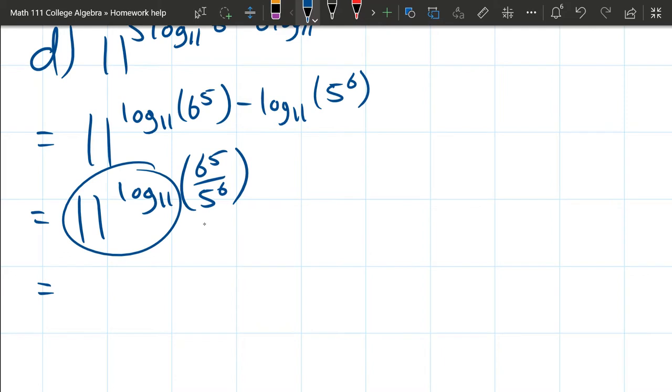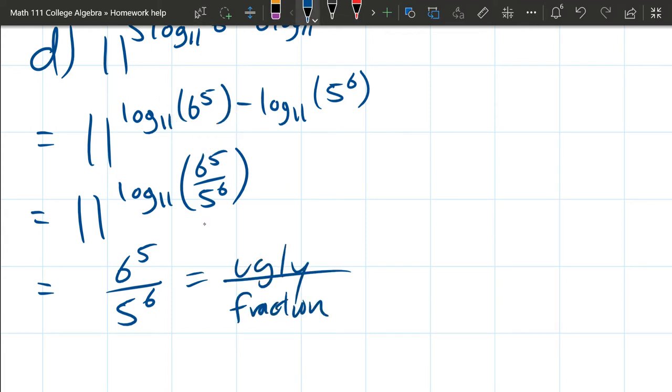So this all cancels and we're left with 6⁵ over 5⁶. You can't really simplify this anymore because we have base 6 in the top, base 5 in the bottom. So you can either leave your answer like this, or you could use a calculator and turn it into some ugly fraction where those will be pretty big numbers. But 6⁵ over 5⁶ should work just like that.